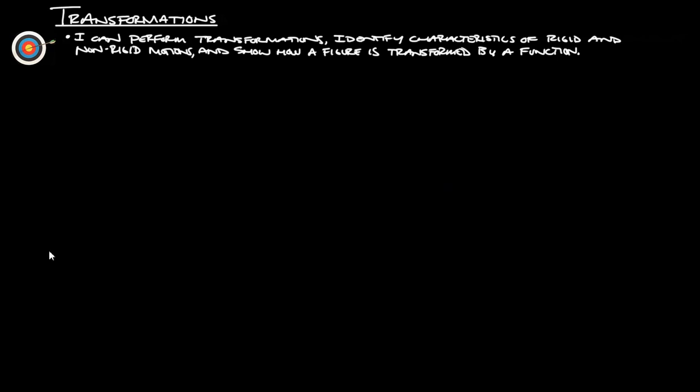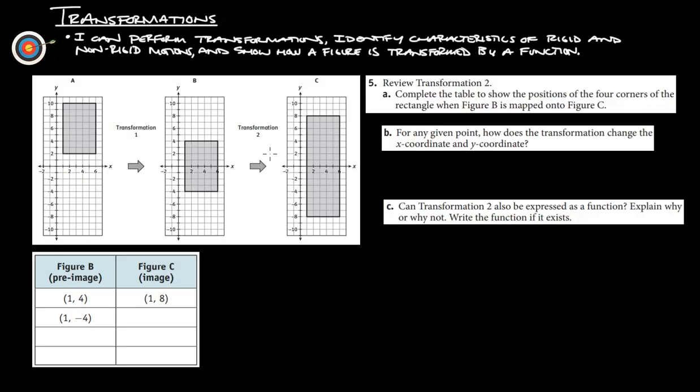All right. Let's look at number five here. Review transformation two. This one here. Complete the table to show the positions of the four corners of the rectangle when figure B is mapped onto figure C. So, we're going to get all the coordinates here. So, we started at 1, 4. And then that maps now onto 1, 8. So, the next one is at 1, negative 4. Bottom left is now at 1, negative 8. And then, we've got 6, 4. Top right is now at 6, 8. And then, bottom right is at 6, negative 4. And then, now, the bottom right is at 6, negative 8.